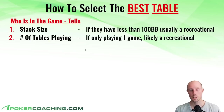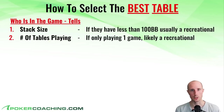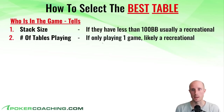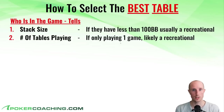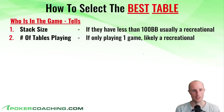Tell number two is the number of tables someone is playing. Someone playing only one game is more likely to be a recreational, unless they're on a waitlist for another game. Likewise, if someone is playing four, six, or eight games, it's pretty clear they are a pro — whether a very tough pro or a rakeback grinder — and they're less likely to give action than someone who's one-tabling. So that's a big tell right there.